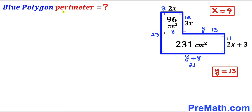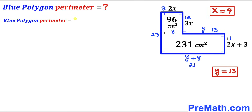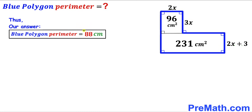For our final step, we calculate the perimeter of this blue polygon by adding up all the side lengths: 8 plus 12 plus 13 plus 11 plus 21 plus 23. Adding all these numbers together gives us 88 centimeters. So the perimeter of the blue polygon turns out to be 88 centimeters.